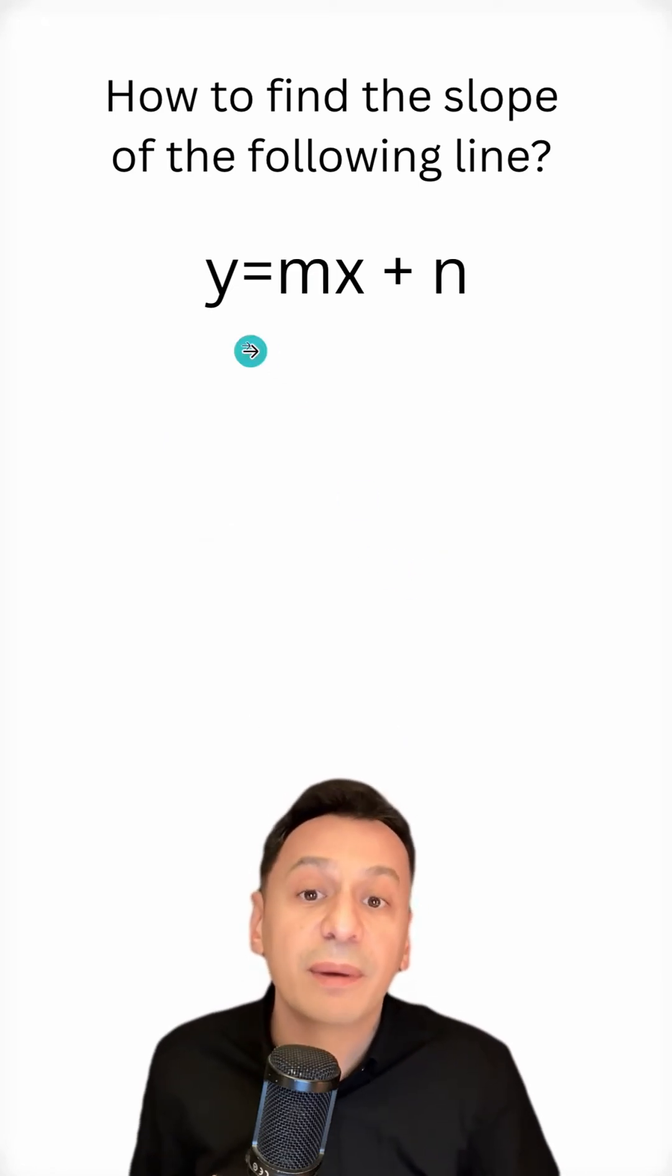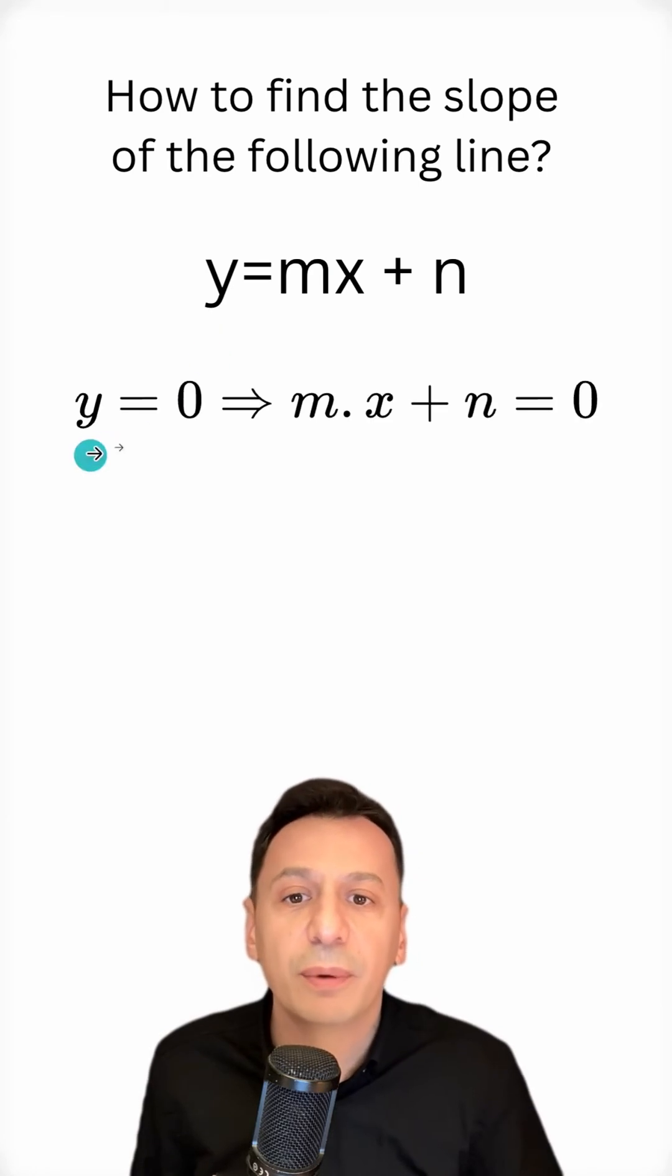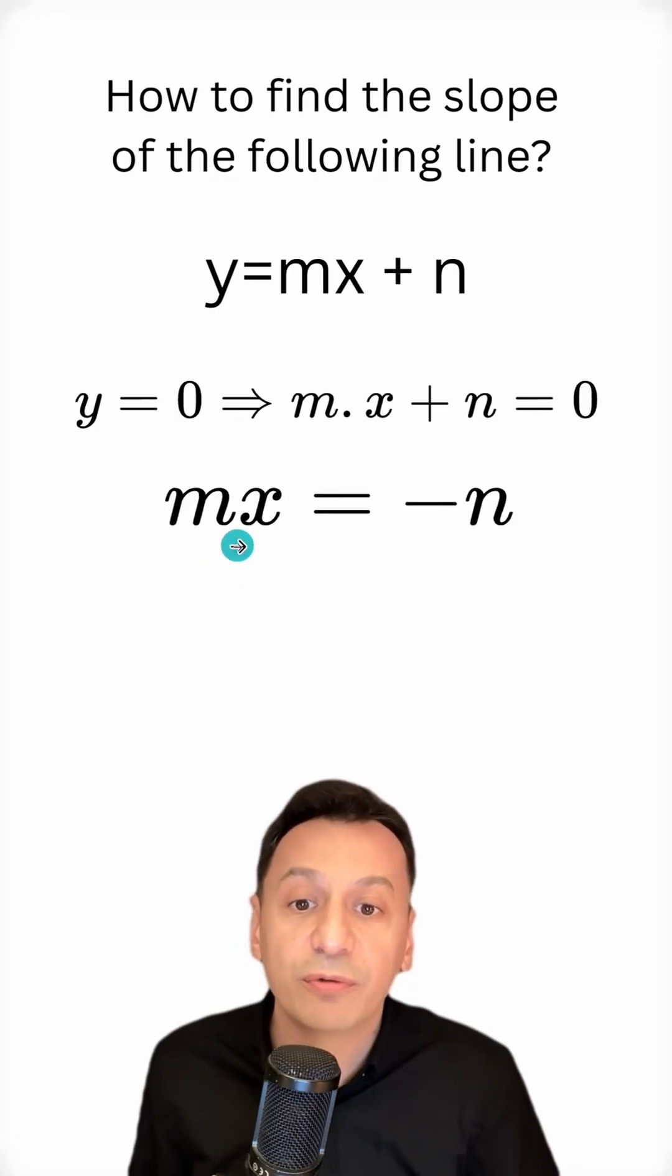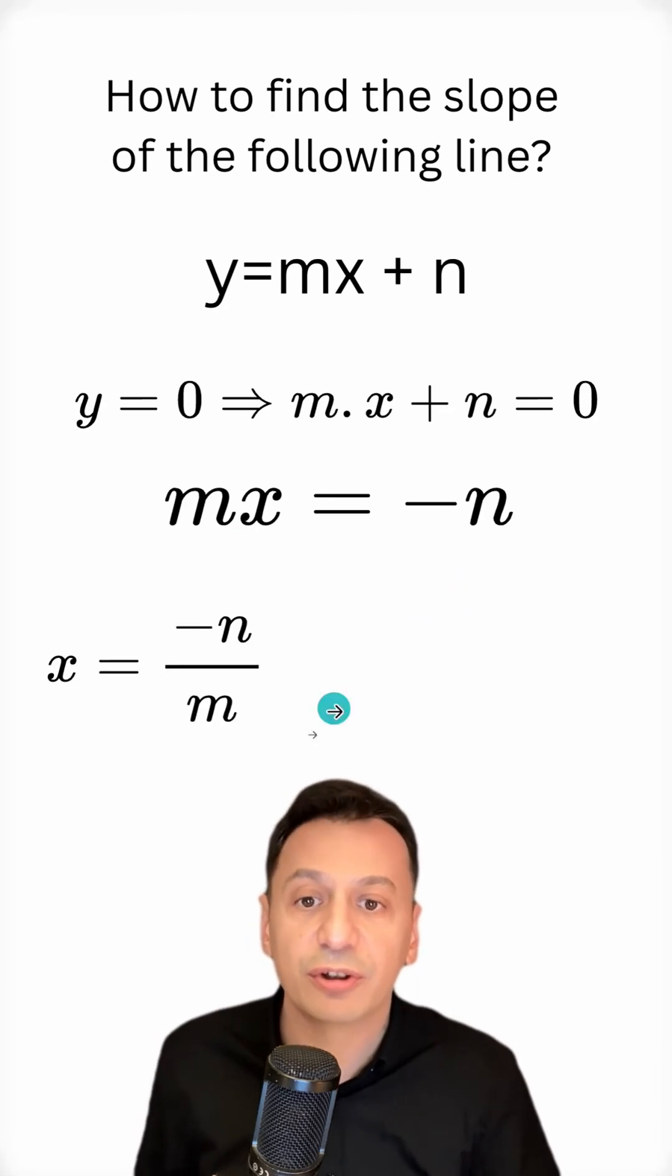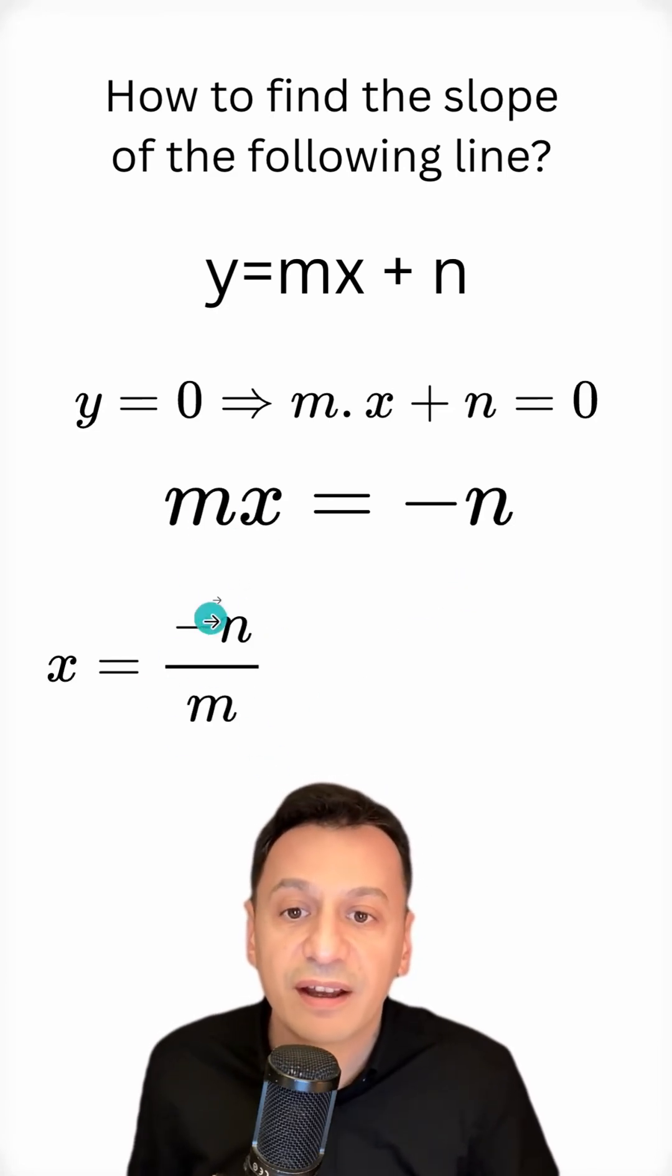In another example, this time I will set y to 0. When I set y to 0, mx plus n will be equal to 0. I move n to the other side as minus n. And I move m, which is multiplication here, to the other side of the equation as division. This way, I've found my abscissa and ordinate again.